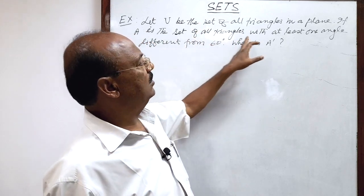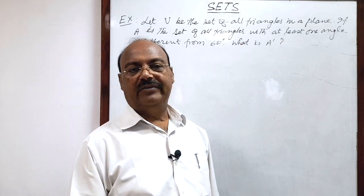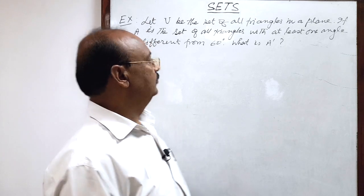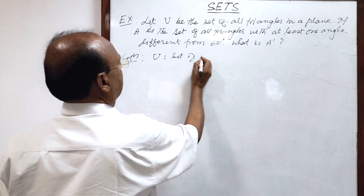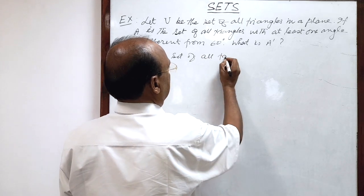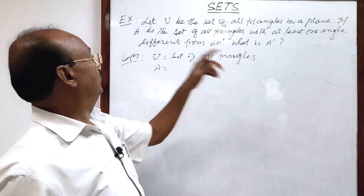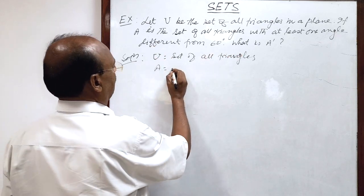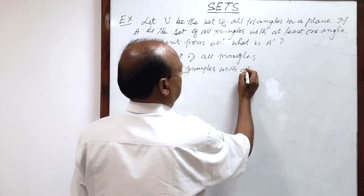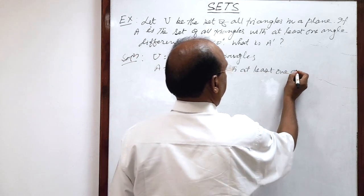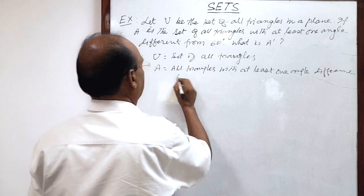Set A is the set of all triangles with at least one angle different from 60 degrees. What is A complement? Here the universal set is the set of all kinds of triangles, and set A is all triangles with at least one angle different from 60 degrees.